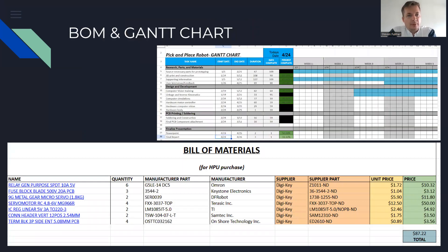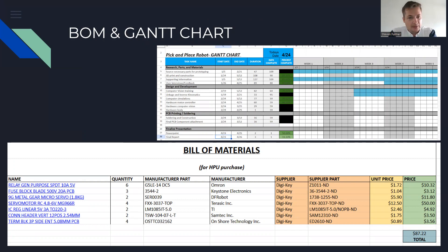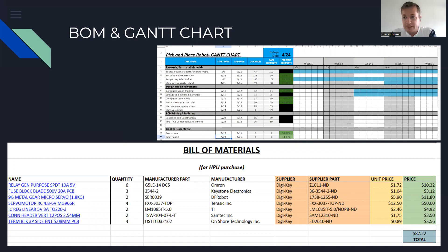This slide shows my bill of materials and Gantt chart. The thing I'd like to point out is that for my entire project, something that would have cost maybe $6,000 commercially, I've been able to bring down to really just $87. You could factor in man-hours for programming, but outside of that the total hardware cost is actually quite cheap.